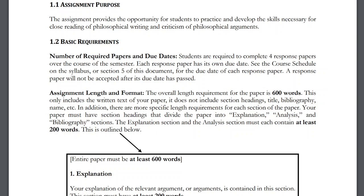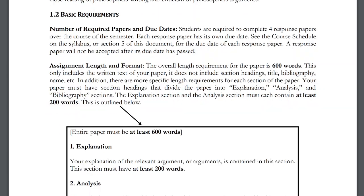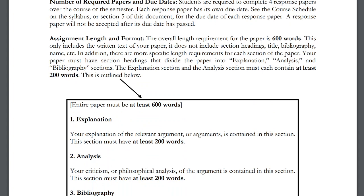Regarding length and format: the paper must be at least 600 words. That's a floor — there is no ceiling. The paper can be as long as you want, though going on for thousands of words would likely mean rambling and could result in points deducted. The 600-word count includes only the actual written text of your paper, not your name, title, section headings, or bibliography.